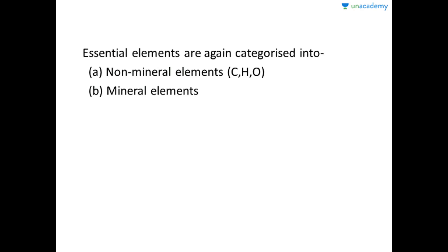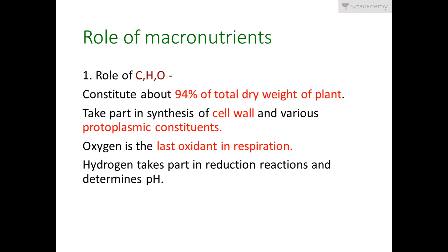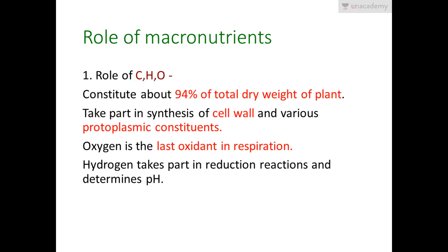Macronutrients are further categorized into non-mineral elements and mineral elements. Non-mineral elements are carbon, hydrogen, and oxygen — they are obtained from the atmosphere and water, not from the soil. Mineral elements are obtained from the soil.